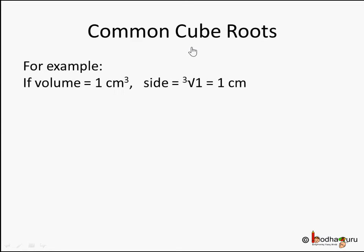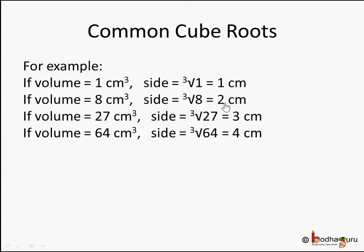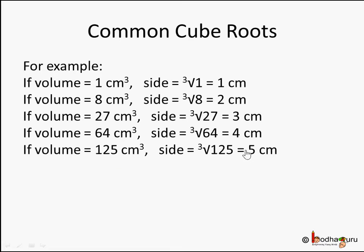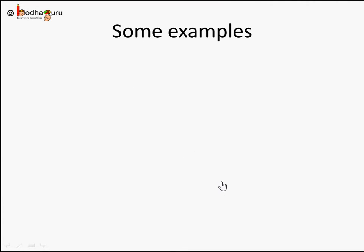Let's see some common cube roots. If the volume is 1 centimeter cube, its side is cube root of 1, which is 1 centimeter. Volume 8 centimeter cube gives side = cube root of 8 = 2 centimeters. Cube root of 125 is 5 centimeters — so a cube of volume 125 centimeter cube has side 5 centimeters. In general, if volume is n centimeter cube, the side is cube root of n.